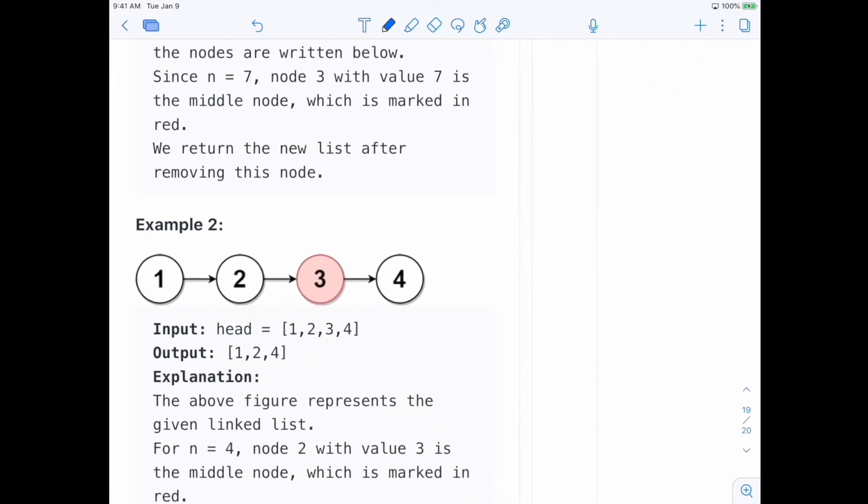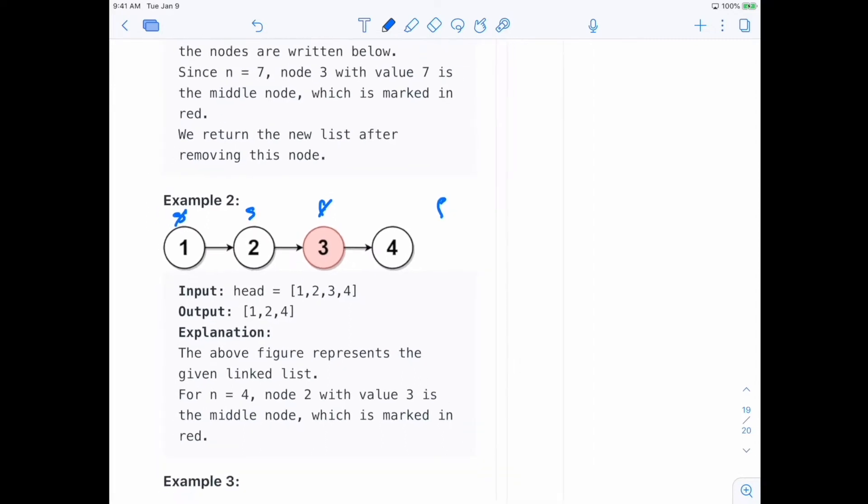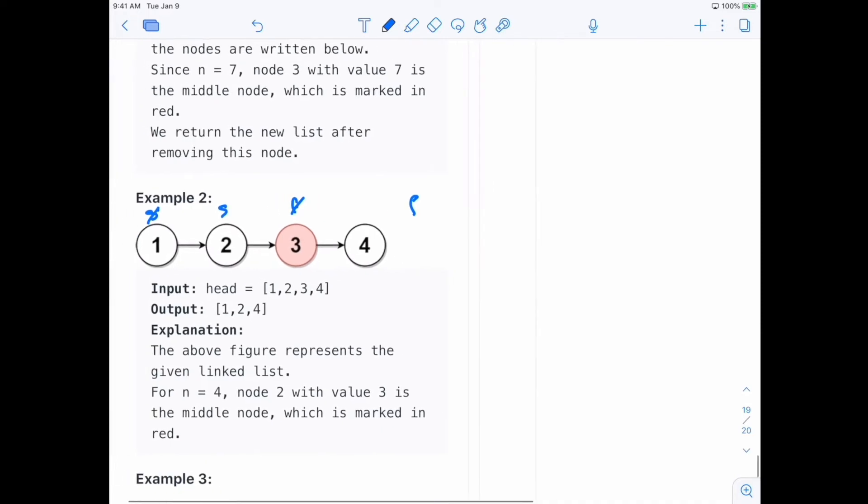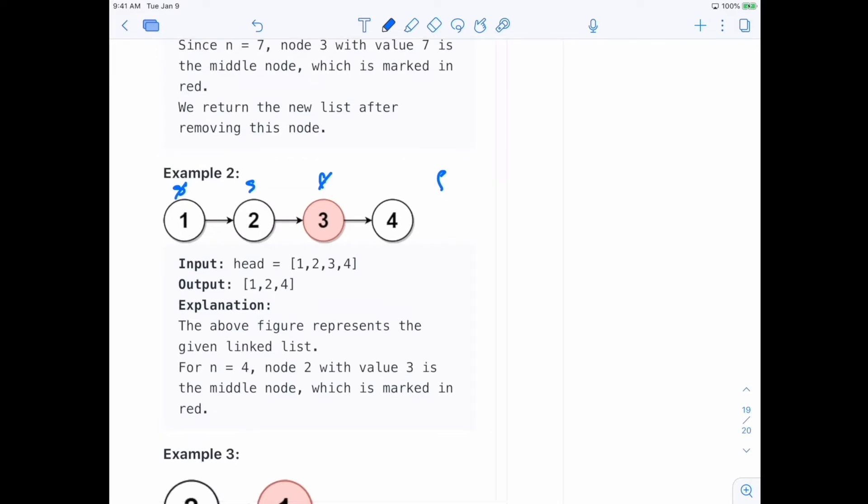Let's apply it to this one and just make sure it works. So we have s here, fast here, we move s, and now fast is done. And so now we can, so you can see it works even with an even list. So now we can move, we can set our pointer.